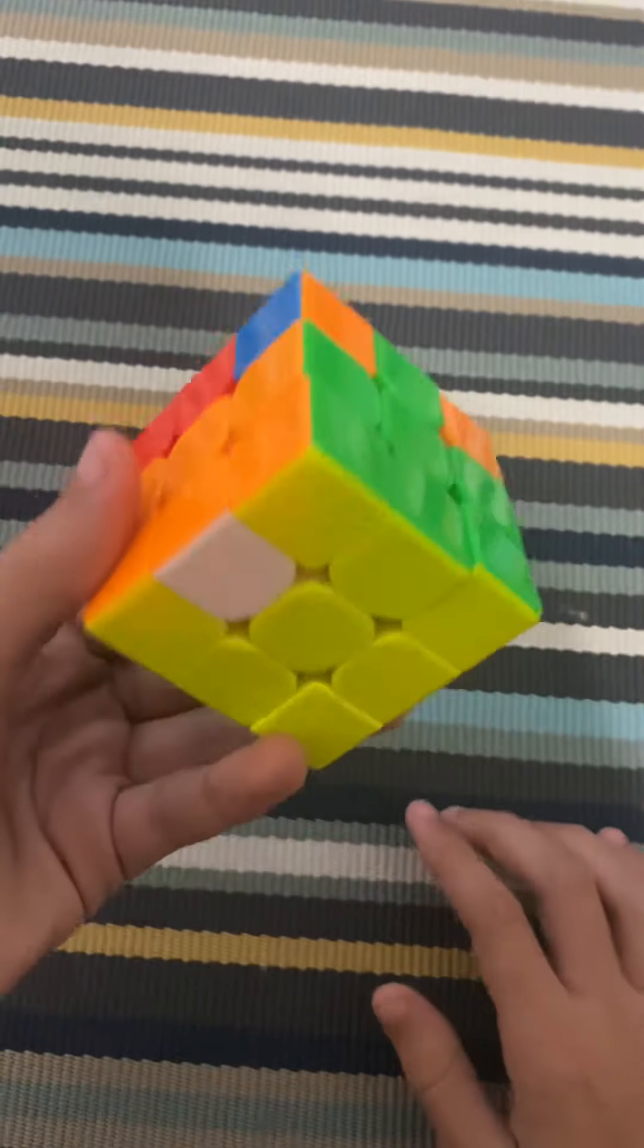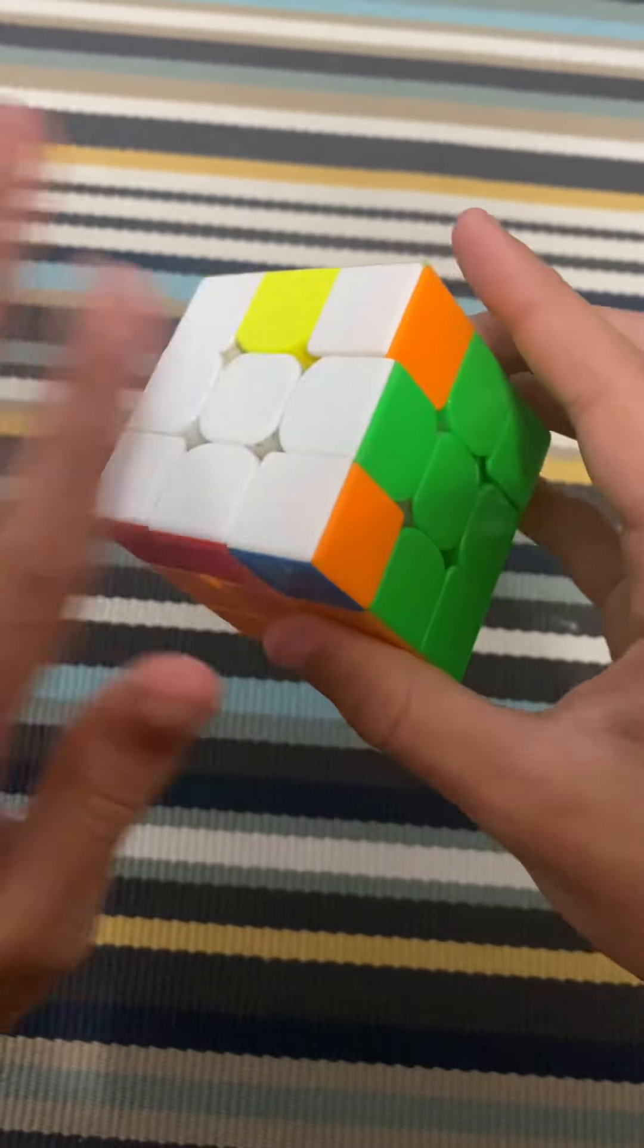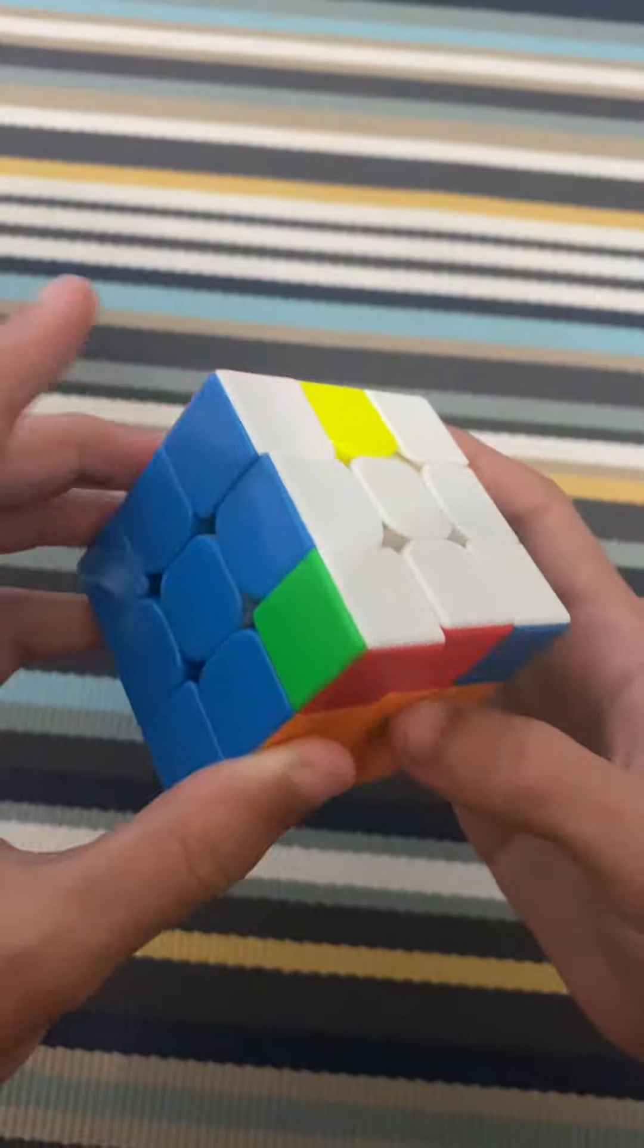I'll show you the bad case later, but let's just focus on this now. And now you have to do the corners. So these two need to flip, so we could just do a J perm or T perm, whatever you choose.